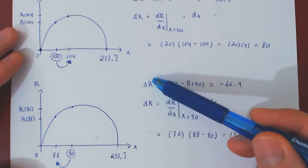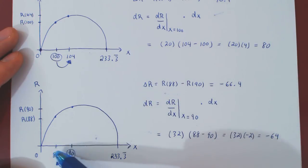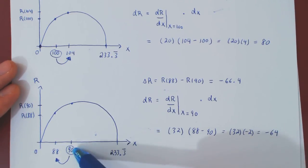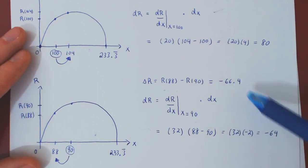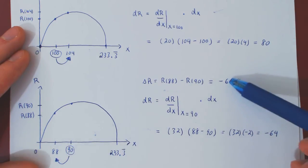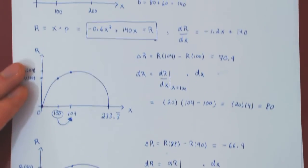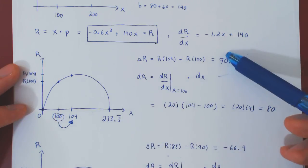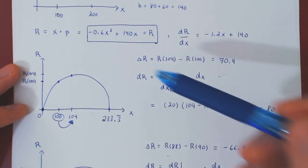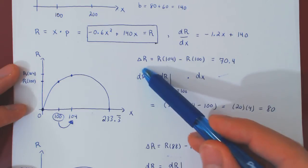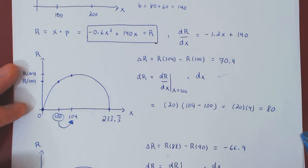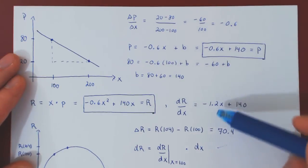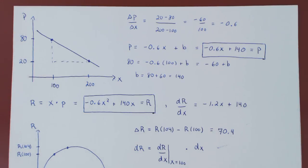This idea of approximating an exact change with a differential is only good for a small enough change in the independent variable. The bigger the change in x, the wider the gap between the exact and the approximate value — a change of two units gave fairly close values, while a change of four units gave values a little further apart. Always keep in mind that you can approximate a change by a differential as long as the change in the independent variable is small enough. If it's too big, you will have a rather poor approximation. This is how you can use differentials to approximate the change in a revenue function — but of course, the idea works for any kind of function.